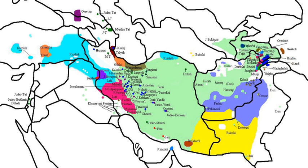Balochi was not a written language before the 19th century, and the Persian script was used to write Balochi wherever necessary. However, Balochi was still spoken at the Baloch courts. British linguists and political historians wrote Balochi with the Latin script. Following the creation of Pakistan, Baloch scholars adopted the Persian alphabet.